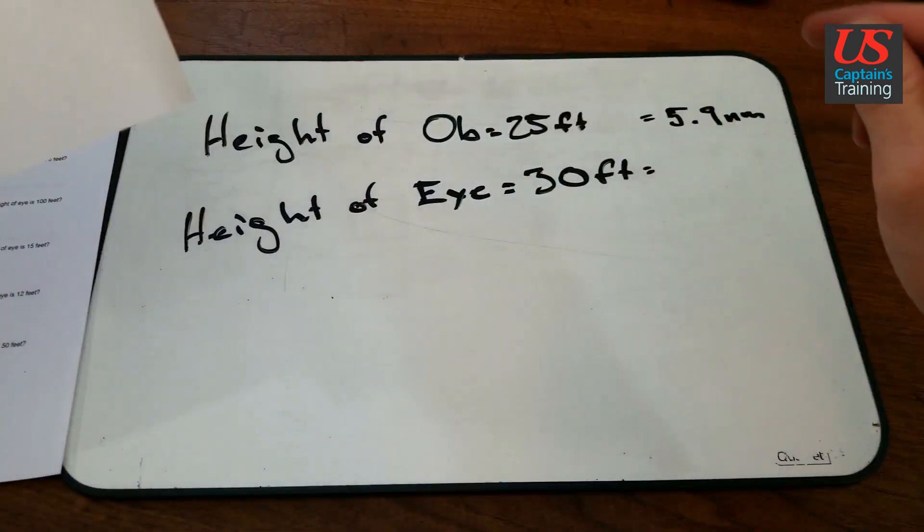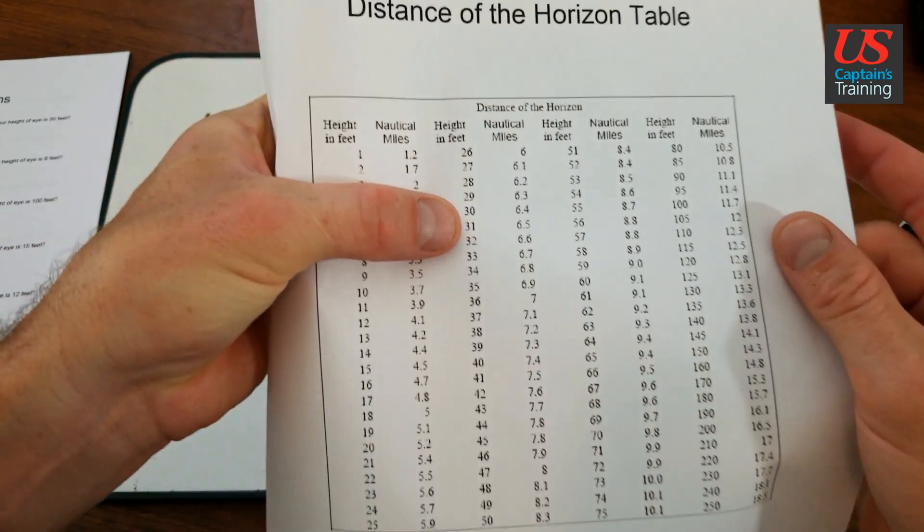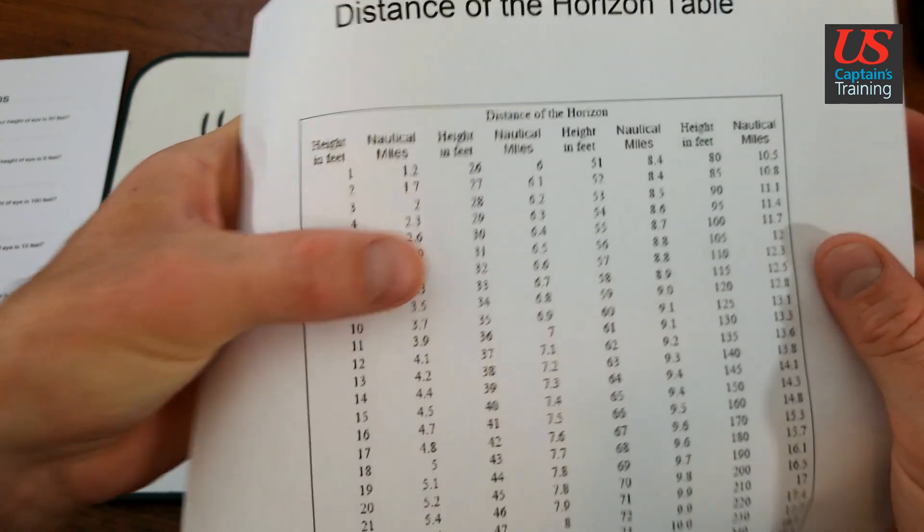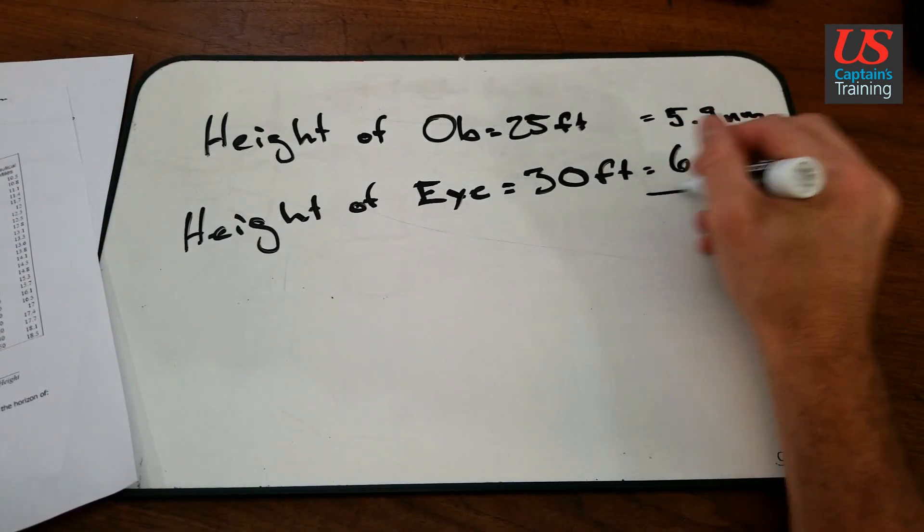If our height of eye is 30 feet, here we have 30 feet and you can see it's 6.4 nautical miles. 6.4 nautical miles to the horizon.